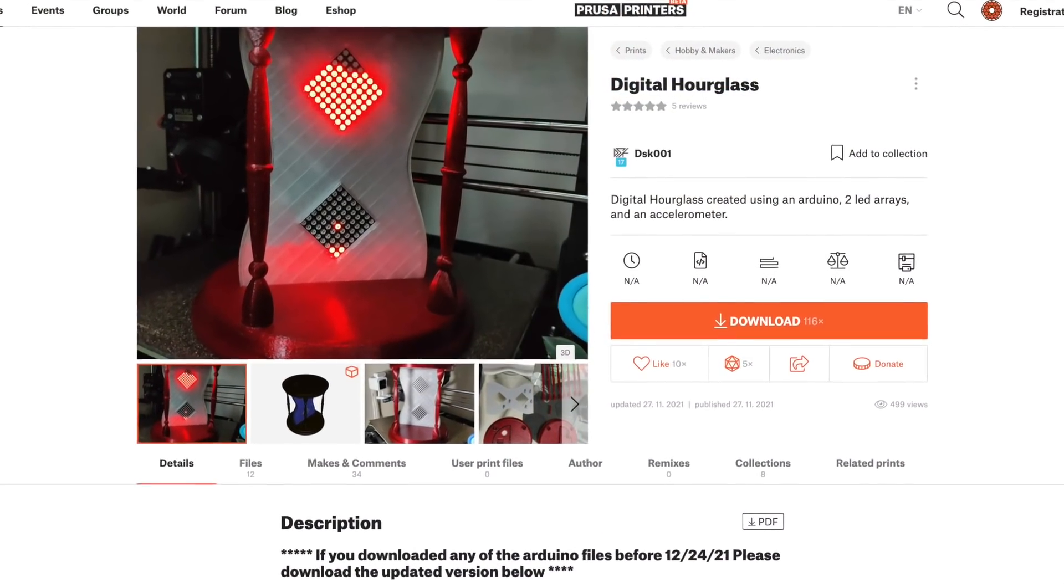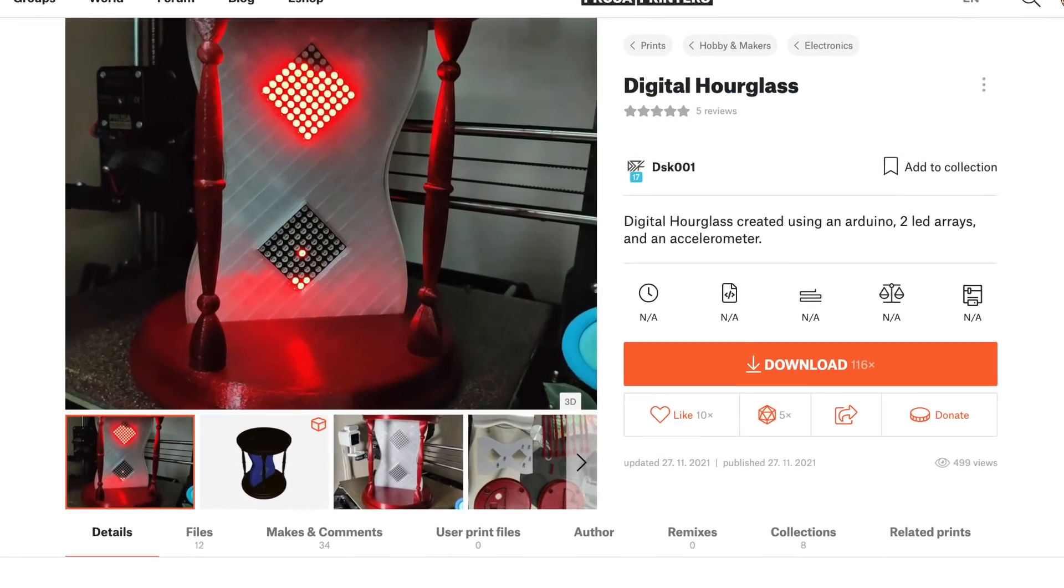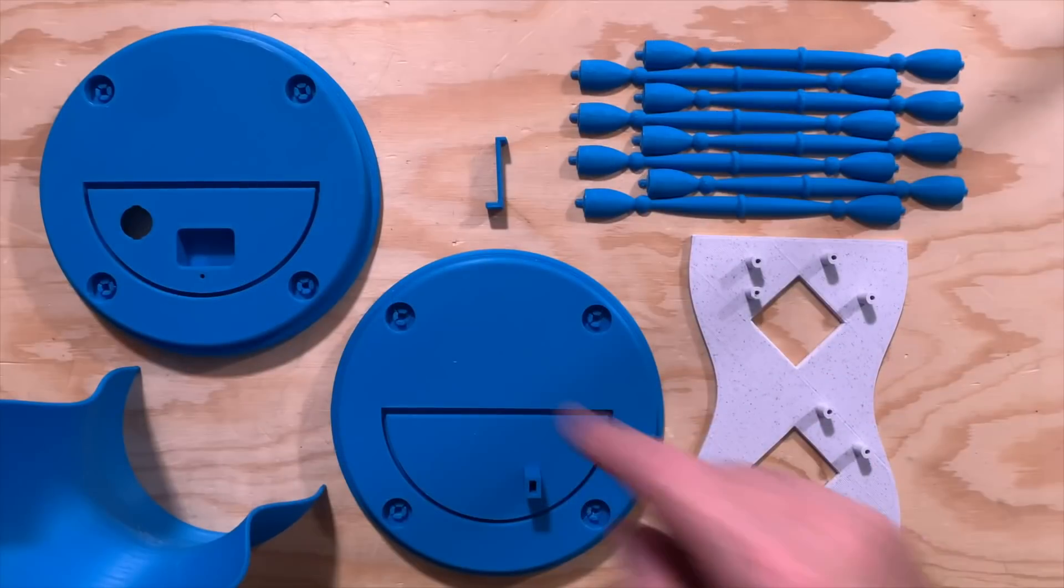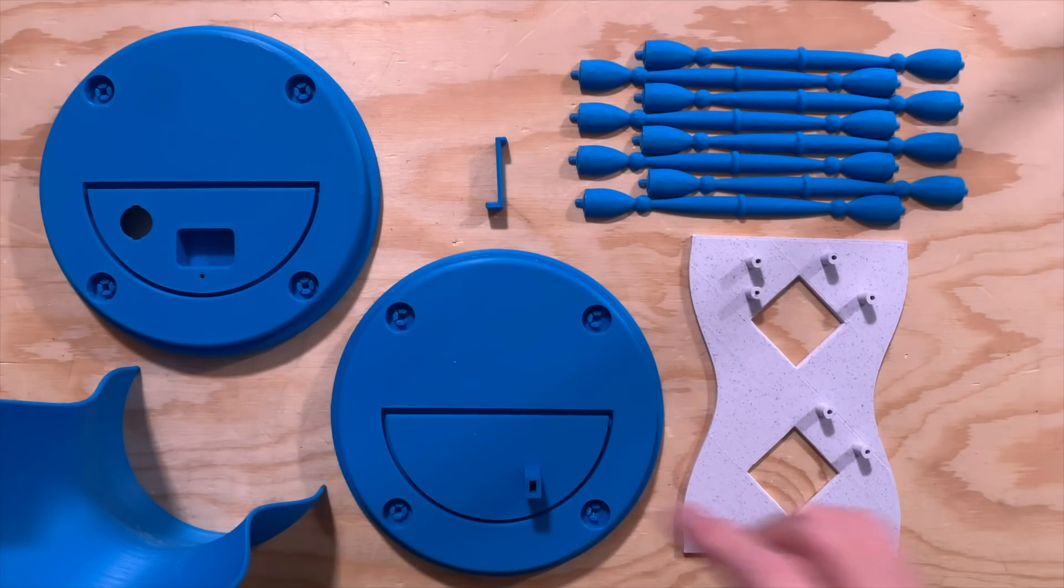So before starting assembly, you'll need to download and print the parts. There's a link in the description that'll take you to the Prusa Printers website, and you can download them from there. You'll need to print the hourglass top and the bottom, the hourglass shaped back, and the flat front piece.